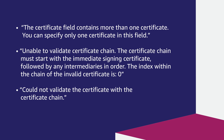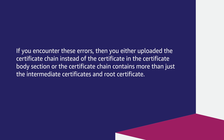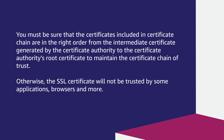For the errors 'The certificate field contains more than one certificate — you can only specify one certificate in this field,' 'Unable to validate certificate chain — the chain must start with the immediate signing certificate followed by any intermediaries in that order,' and 'Could not validate the certificates with the certificate chain': if you encounter these errors, then you either uploaded the certificate chain instead of the certificate in the certificate body section, or the certificate chain contains more than just the intermediate and root certificates. You must ensure that the certificates included in the certificate chain are in the right order — from the intermediate certificates generated by the certificate authority to the certificate authority's root certificates — to maintain the certificate chain of trust. Otherwise, the SSL certificates will not be trusted by some applications, browsers, and more.